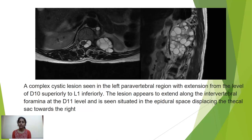A complex cystic lesion is seen in the left paravertebral region with extension from the level of D10 superiorly to L1 inferiorly. The lesion appears to extend along the intervertebral foramina at the D11 level and is situated in the epidural space, displacing the thecal sac towards the right.